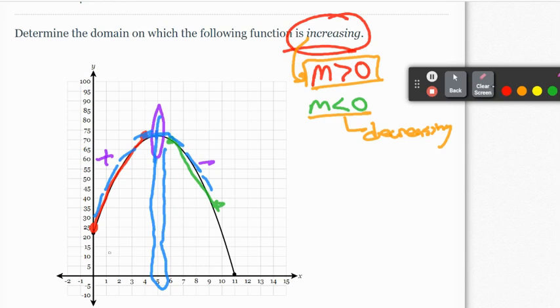So our job is to say that the increasing interval starts here at zero, stops at five. And now I would use parentheses because I would say at the start and the finish, you're not increasing or decreasing, but brackets are acceptable.